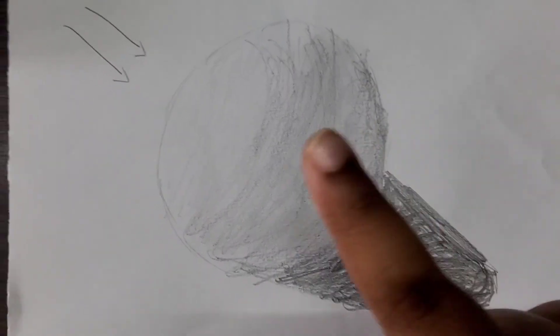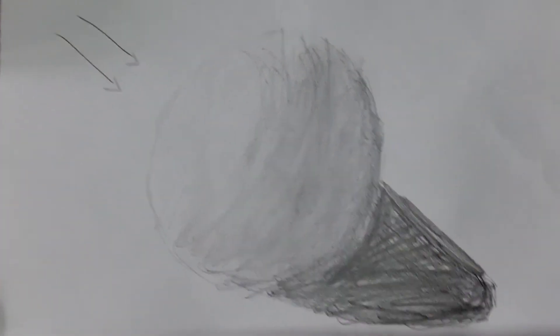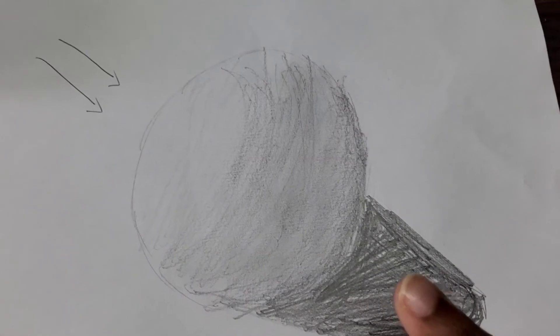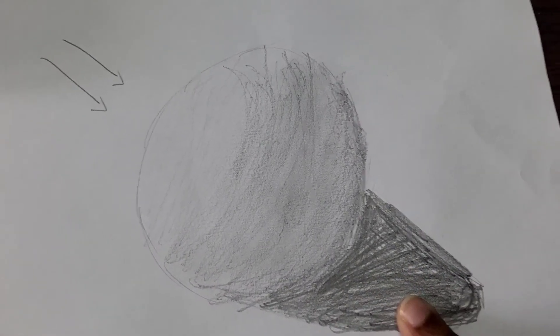the finished product. Light is coming from this position, and here it must be darker because there's no light. Also, you can add a cast shadow. Thank you guys for watching. Make sure you like, share, and subscribe for more updates. Bye!